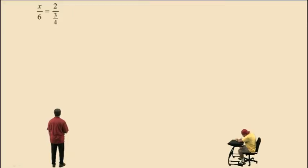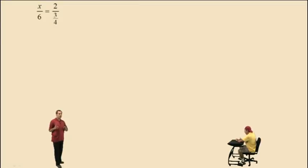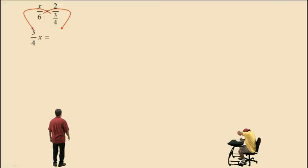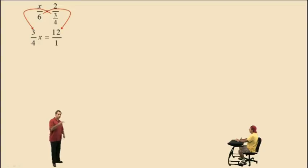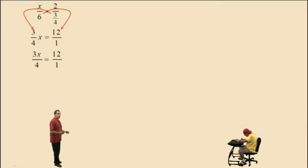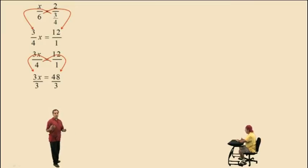Let's do another one. Here we have x over 6 equals 2 over 3-fourths. Now we have a complex fraction on the right-hand side, so it will be easier to cross multiply. As you're going to see in this problem, sometimes you have to cross multiply more than once. Cross multiplying this way, we get 3-fourths times x. Cross multiplying the other way, 6 times 2, that's 12 — let's write the 12 as 12 over 1. On the left-hand side, 3-fourths times x over 1 gives us 3x over 4. The right-hand side is 12 over 1. So now we can cross multiply again: 1 times 3x is 3x, 4 times 12 is 48. Now we divide both sides by 3 to get x equals 16. That is our answer.